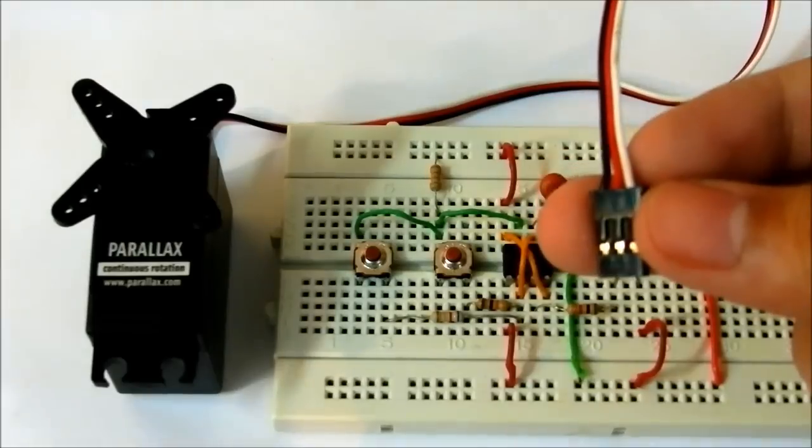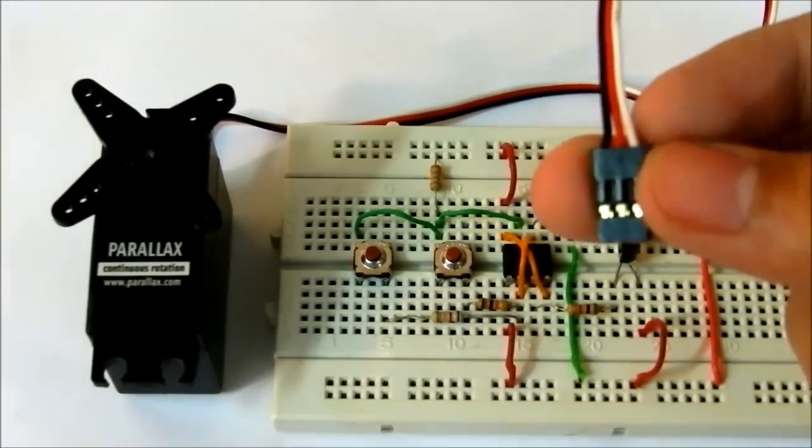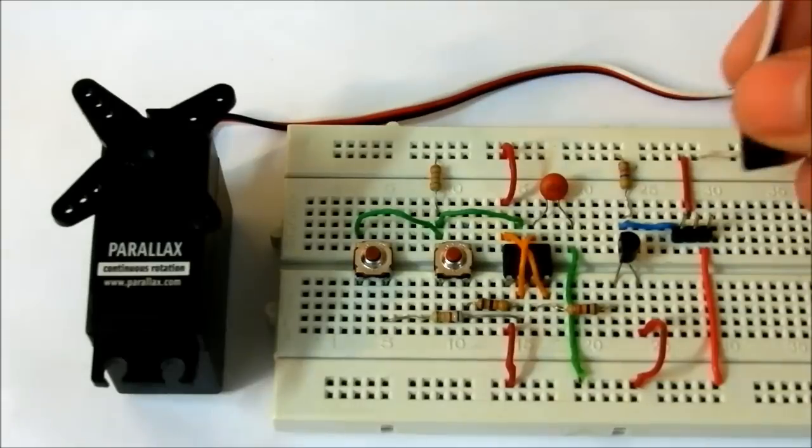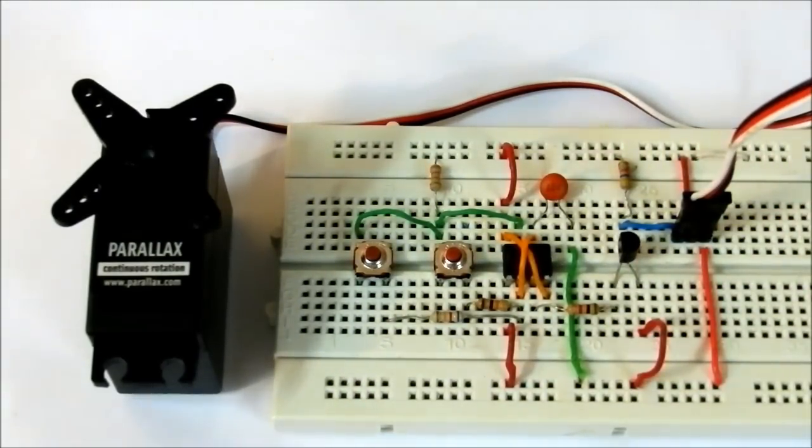Now in a servo, you get three wires: black which is ground, red for 5V, and white is the signal. The signal comes from this transistor, this blue wire. And now we'll connect it to the battery.